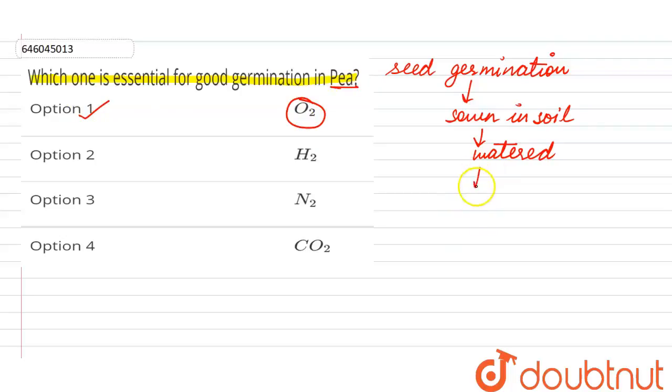Because inside the seeds there is embryo. Embryo is going to respire. For the process of respiration it requires oxygen, whereas embryo will not be able to respire in anaerobic condition.